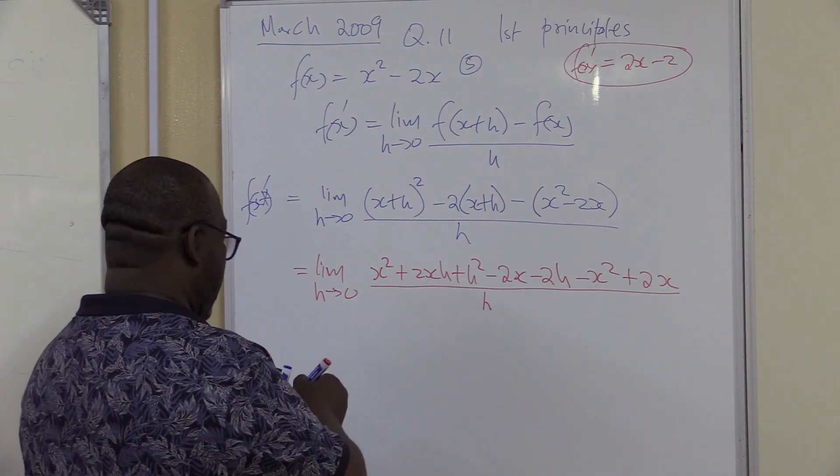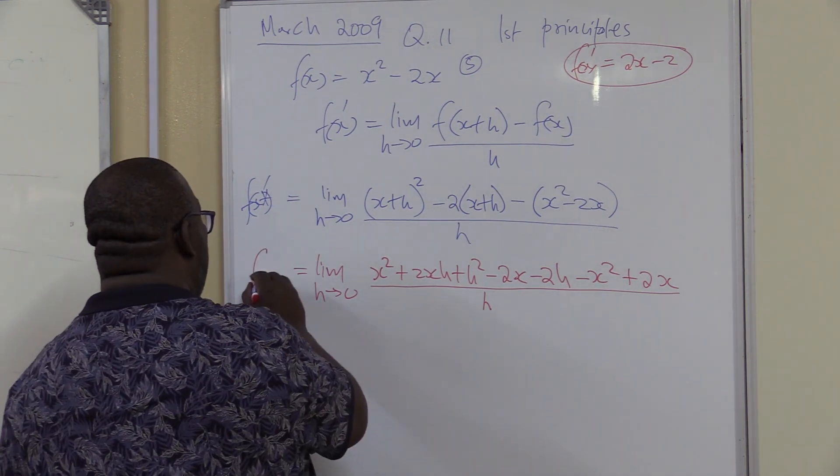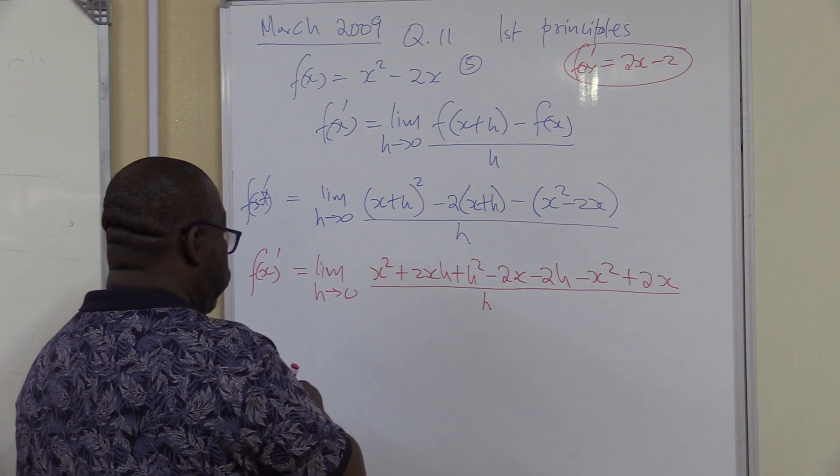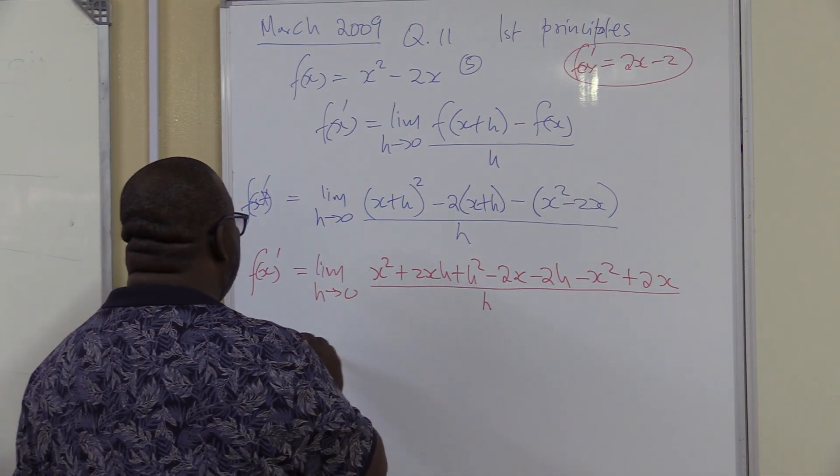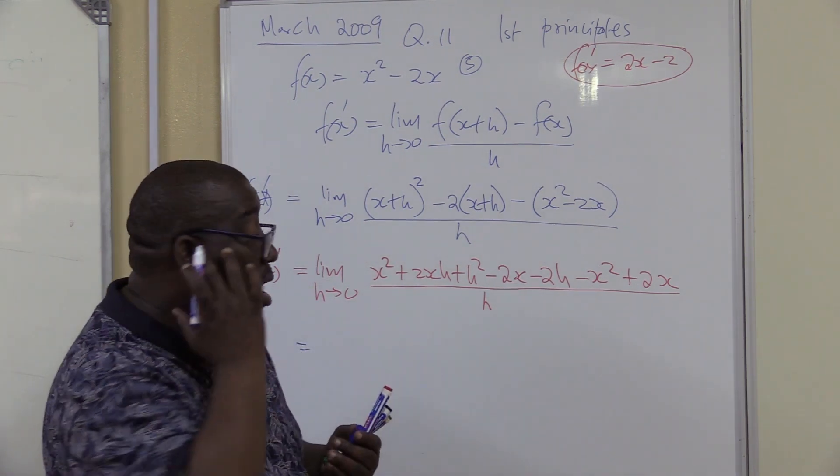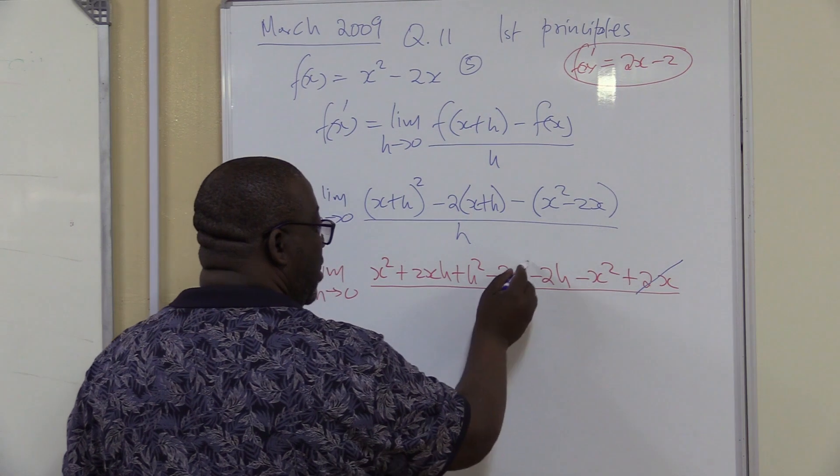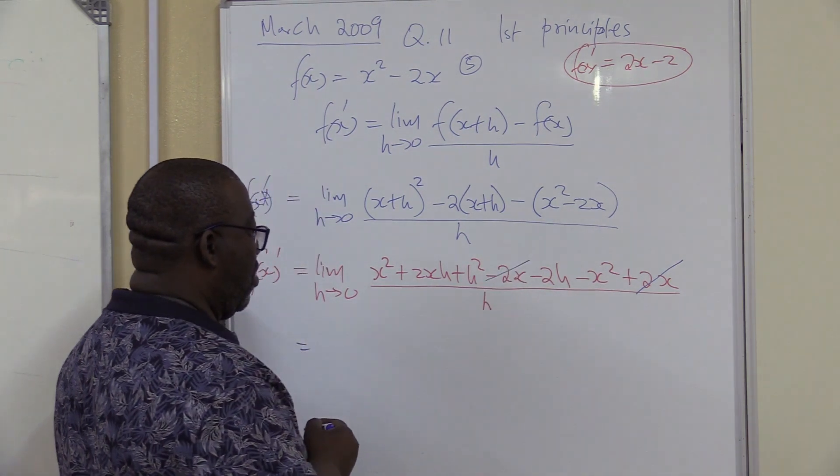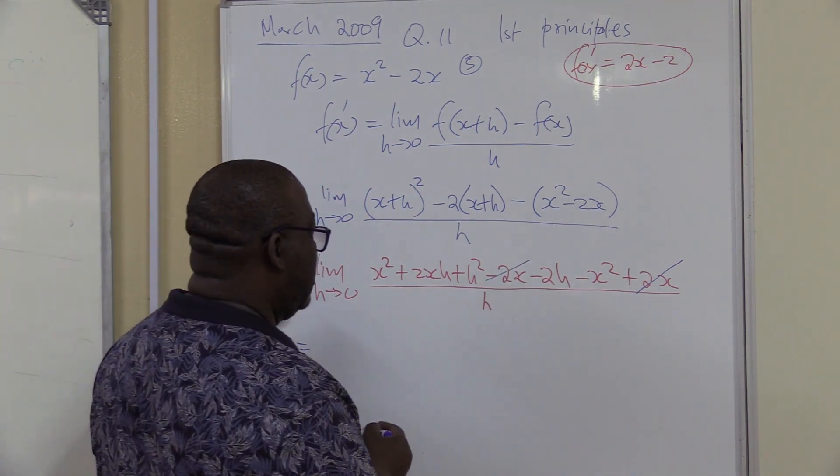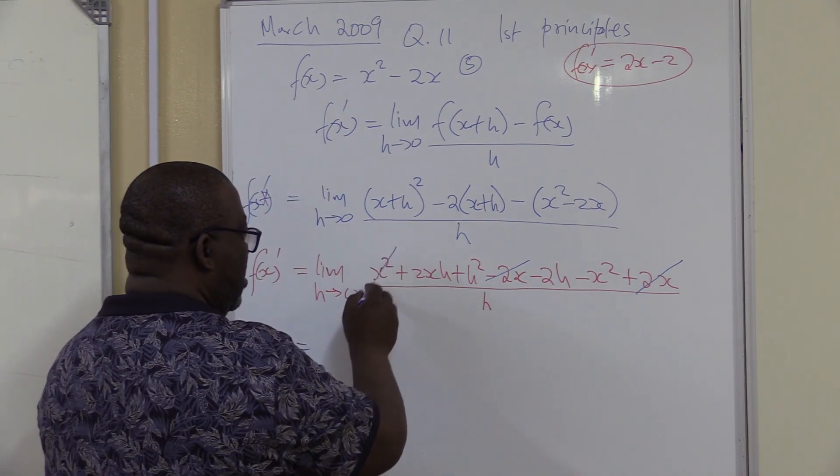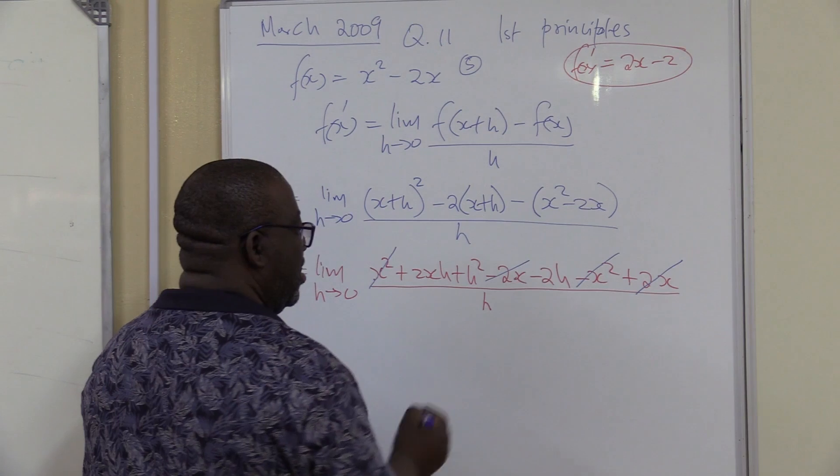That's what we have so far. This is our f'(x). Let's continue. We look for like terms. We know that 2x minus 2x will give us 0. Anything else that I see here? x² minus x² gives us 0.